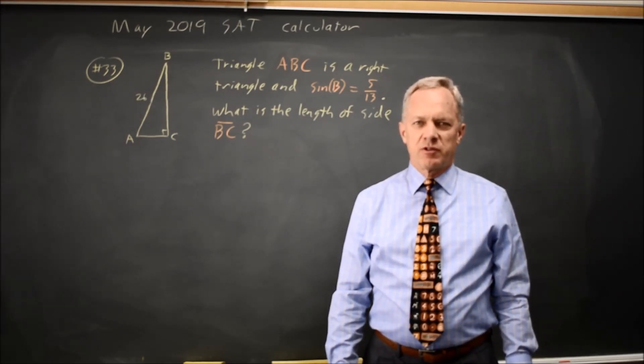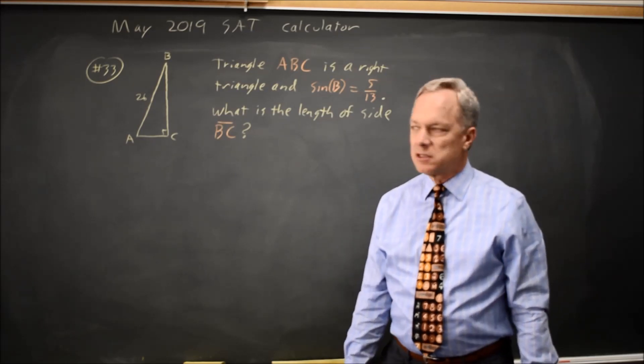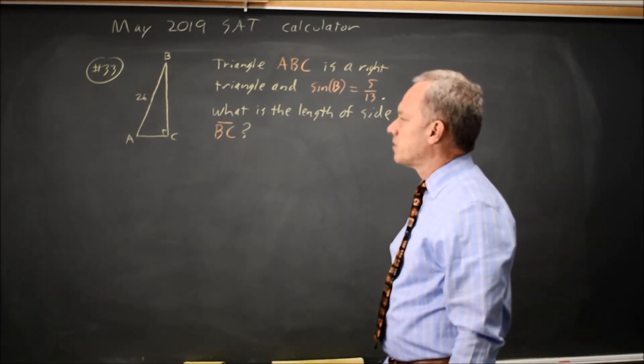This is calculator question 33 from the May 2019 international exam. College Board gives us a triangle and the sine of an angle, and they ask for the length of another side.